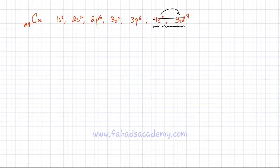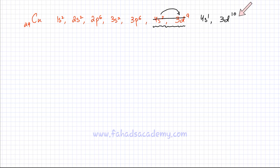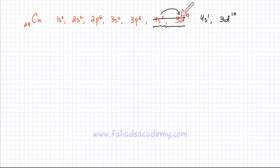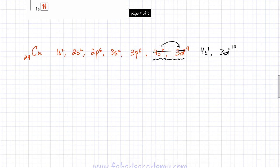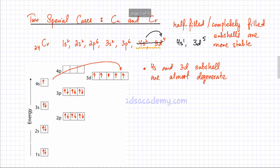So the expected configuration would not be the electronic configuration of copper. Instead, it would be 4s1 and 3d10, completely full. A completely full orbital would have all electrons paired, so repulsion would be minimized and having 10 electrons in the 3d subshell makes it more stable. The electronic configuration of copper is slightly different from what we normally write, and it must be remembered. Similarly, the same applies to chromium — instead of 4s2, 3d4, it is going to be 4s1, 3d5.